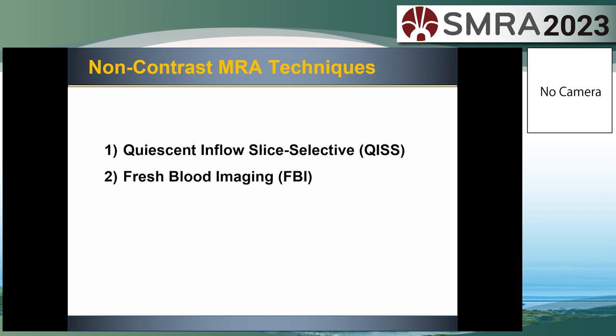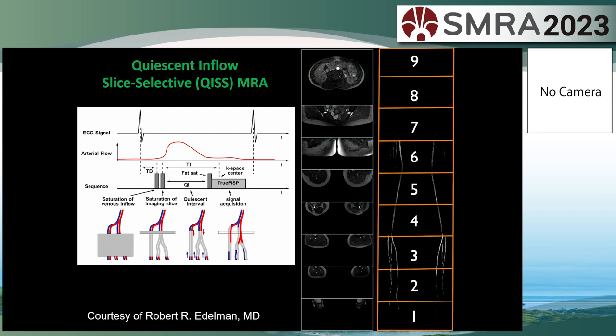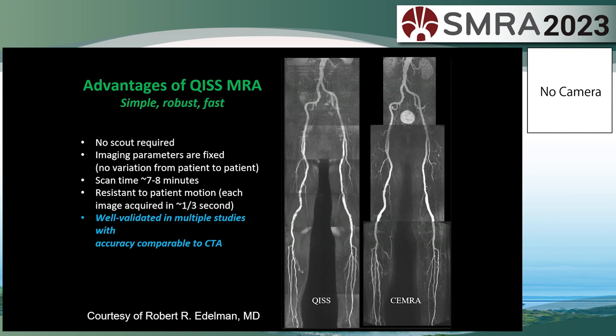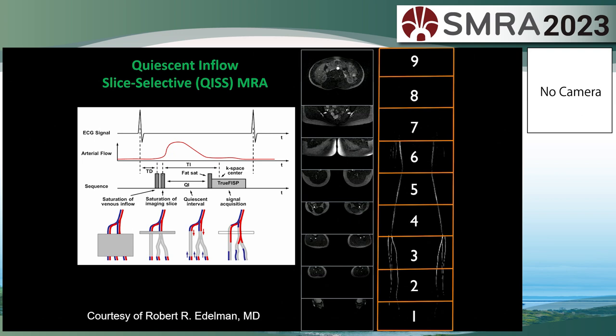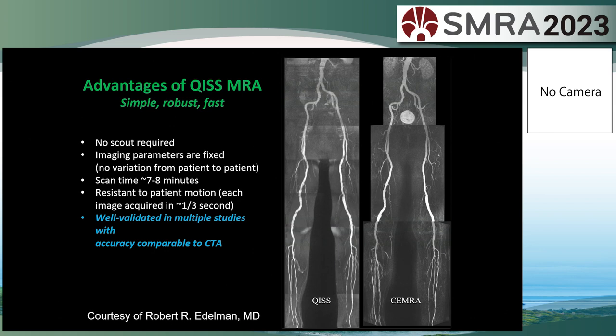There are two non-contrast MRA techniques widely used. First, QIS. QIS utilizes an inflow effect of blood. Saturation of venous inflow and imaging slices are applied, and a weighted quiescent interval followed by FATSAT and balanced SSFP readout. As shown on the right, nine segmentations were acquired in axial slices, like time of flight, and reformatted in coronal orientation. The advantages of QIS MRA are simple, robust, and fast. No scout required. Imaging parameters are fixed and resistant to patient motion.